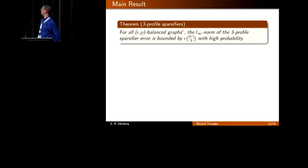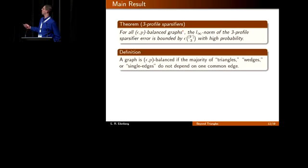It's easy to see with substitution that the means are correct, but then a natural question is what's the concentration around these means? This leads us to our main technical result, a theorem on three-profile sparsifiers. I've tried to write this in plain English. The mathematical details are in the paper. Basically, for a class of well-behaved graphs, epsilon p balanced graphs for a tolerance epsilon and a sampling probability p, we can bound the L-infinity norm of our sparsifier error by a term proportional to vertices choose 3 with high probability.